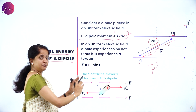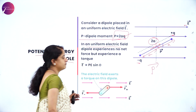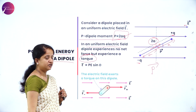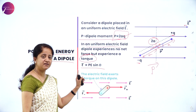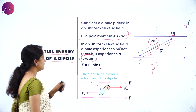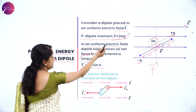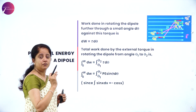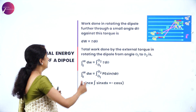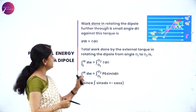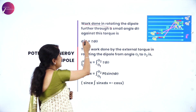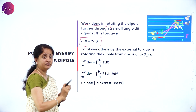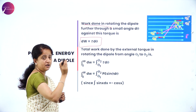We have placed this dipole in a uniform external field. In a uniform external field, a dipole experiences no net force but experiences a torque. The torque is τ = PE sinθ, as derived in chapter 1. The work done in rotating a dipole through a small angle dθ against this torque is dW = τ dθ, where dW is the work done, τ is the torque, and dθ is a small angular displacement.